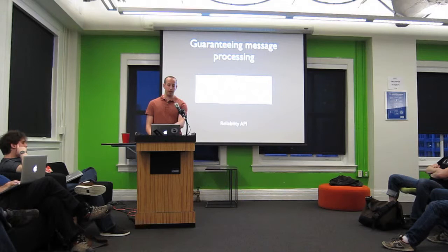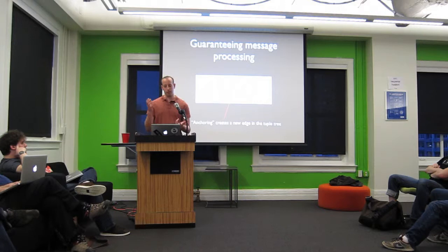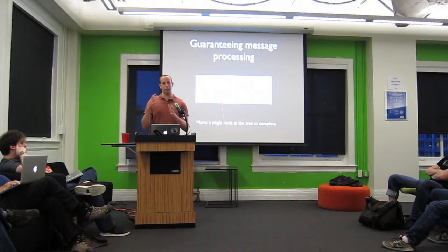It splits the sentence on whitespace and then emits the words. For every word it emits, it puts that original sentence tuple as the first argument. This is called anchoring, and it creates a new edge in the tuple tree between the new word tuple and the old sentence tuple. Finally, when you're done processing a tuple, you ack the tuple, and that marks that one node as complete. Storm does the rest of actually tracking the tuple tree and determining when it's time to ack or fail the spout tuple at the source.